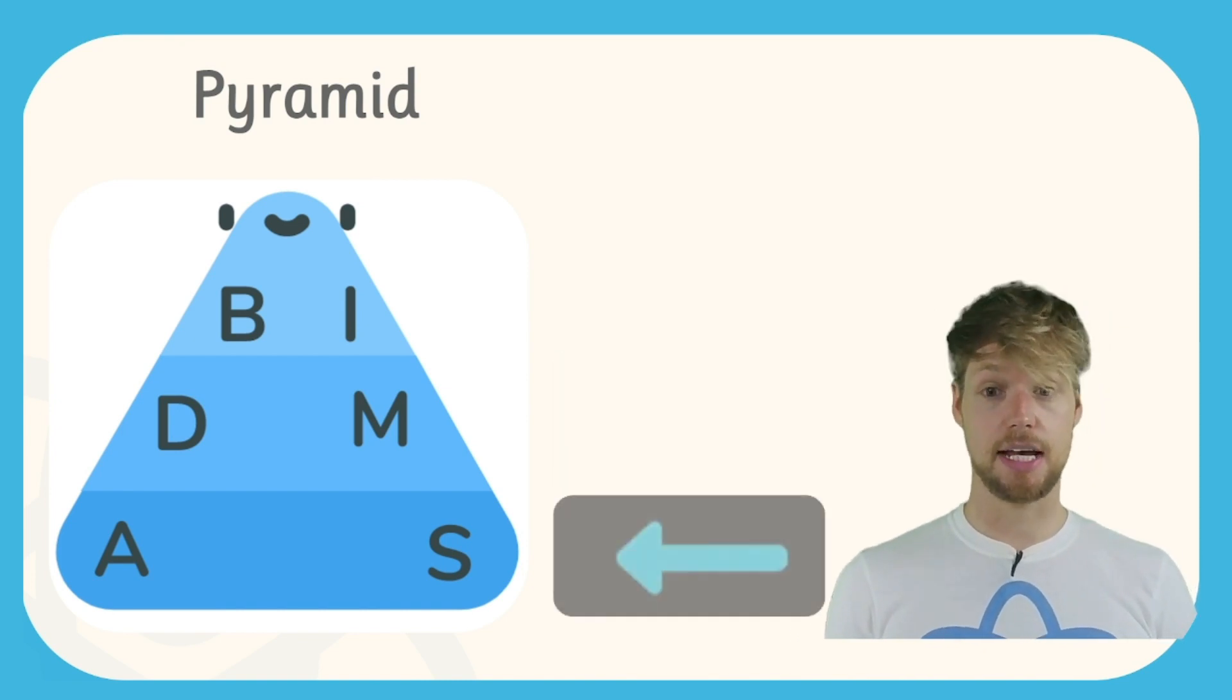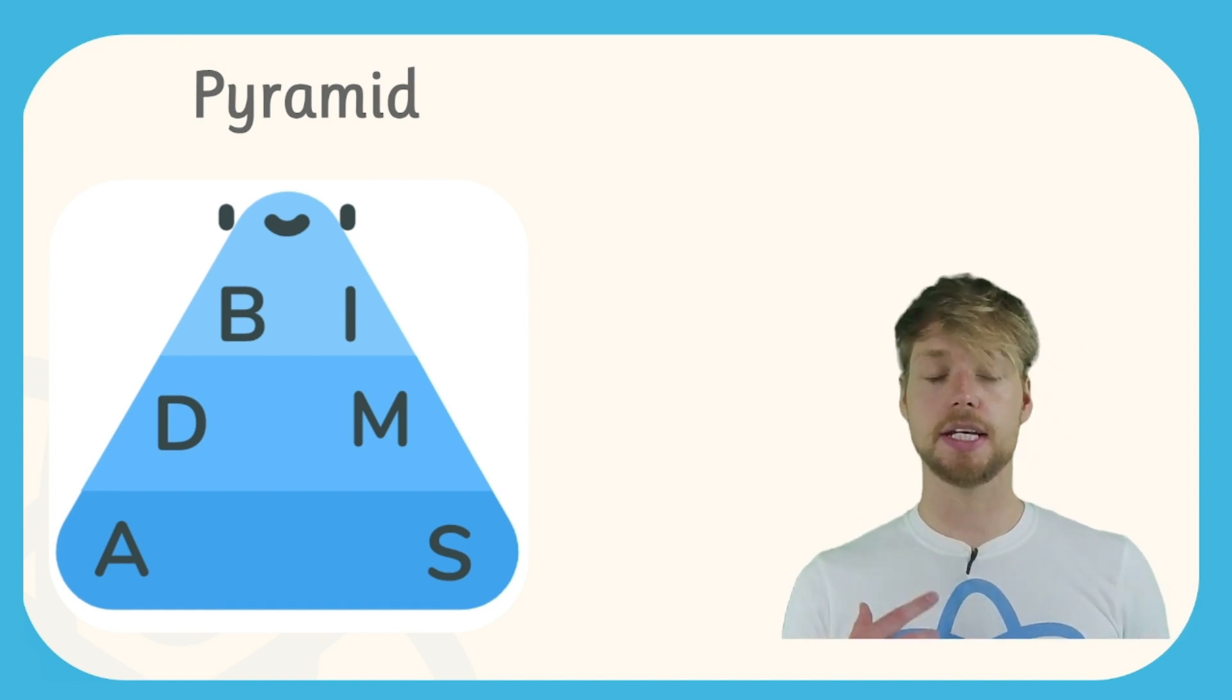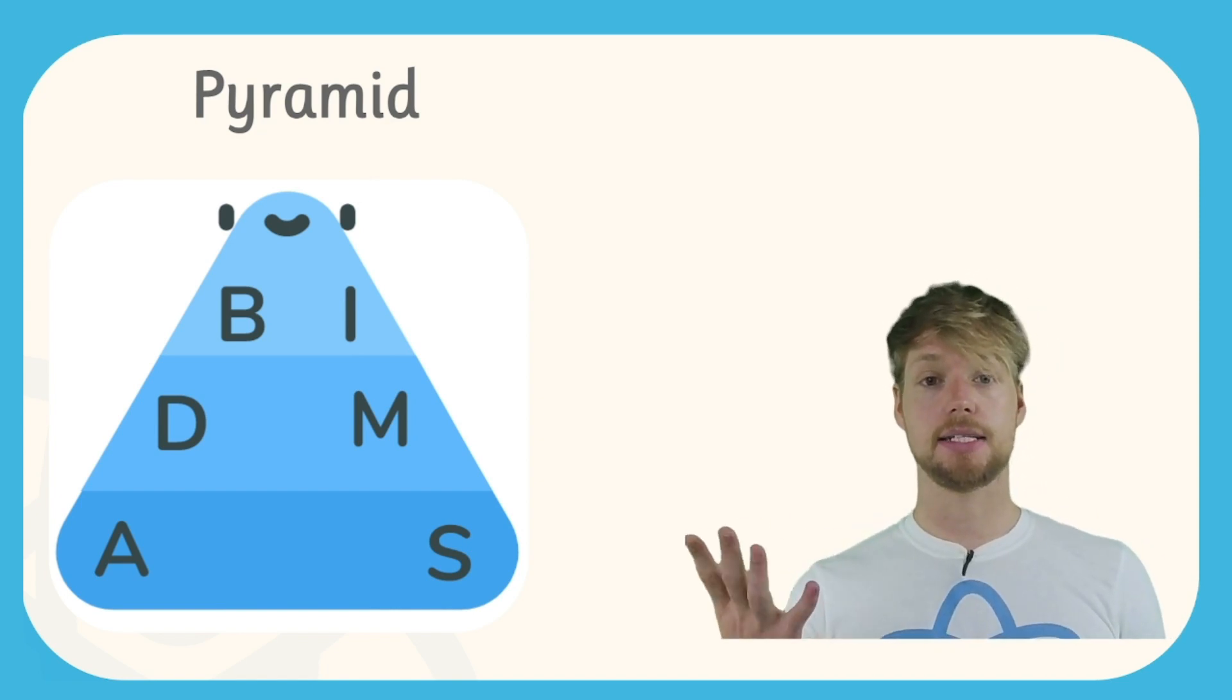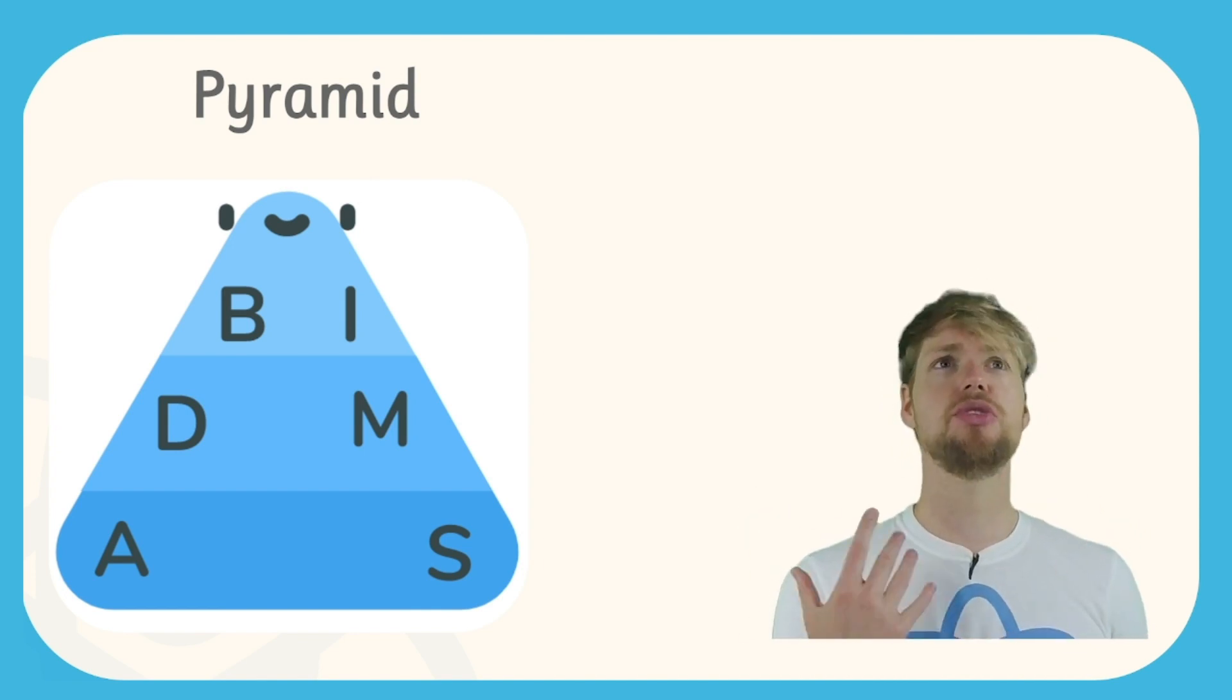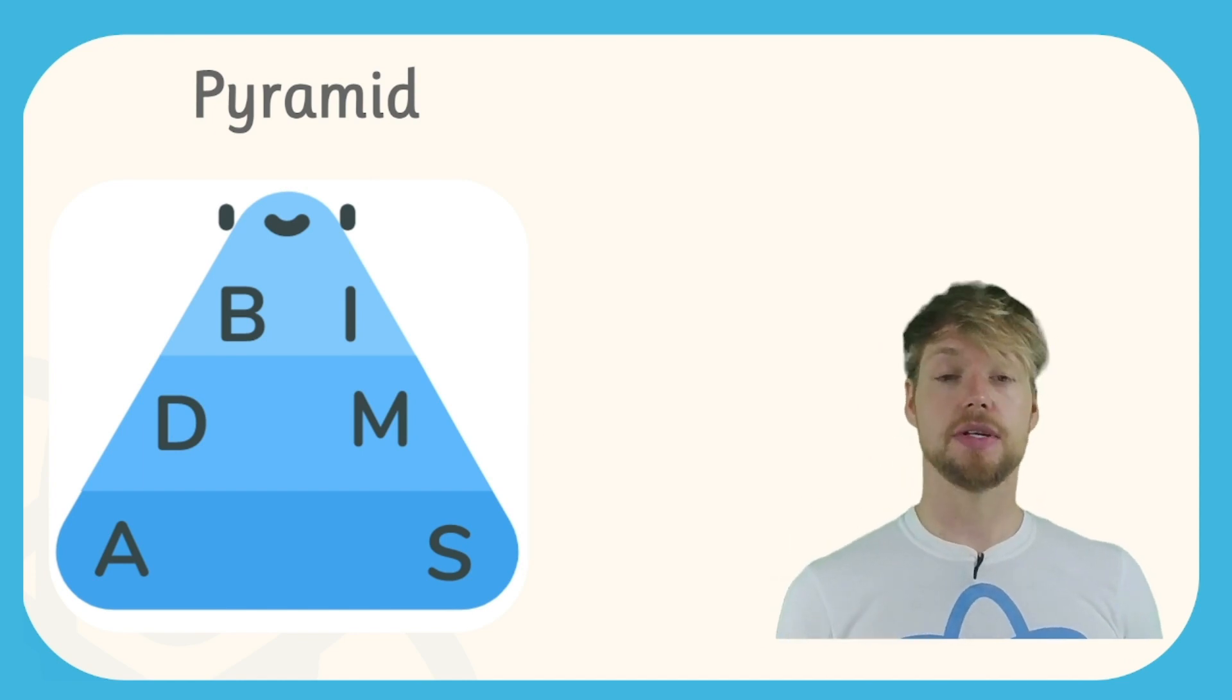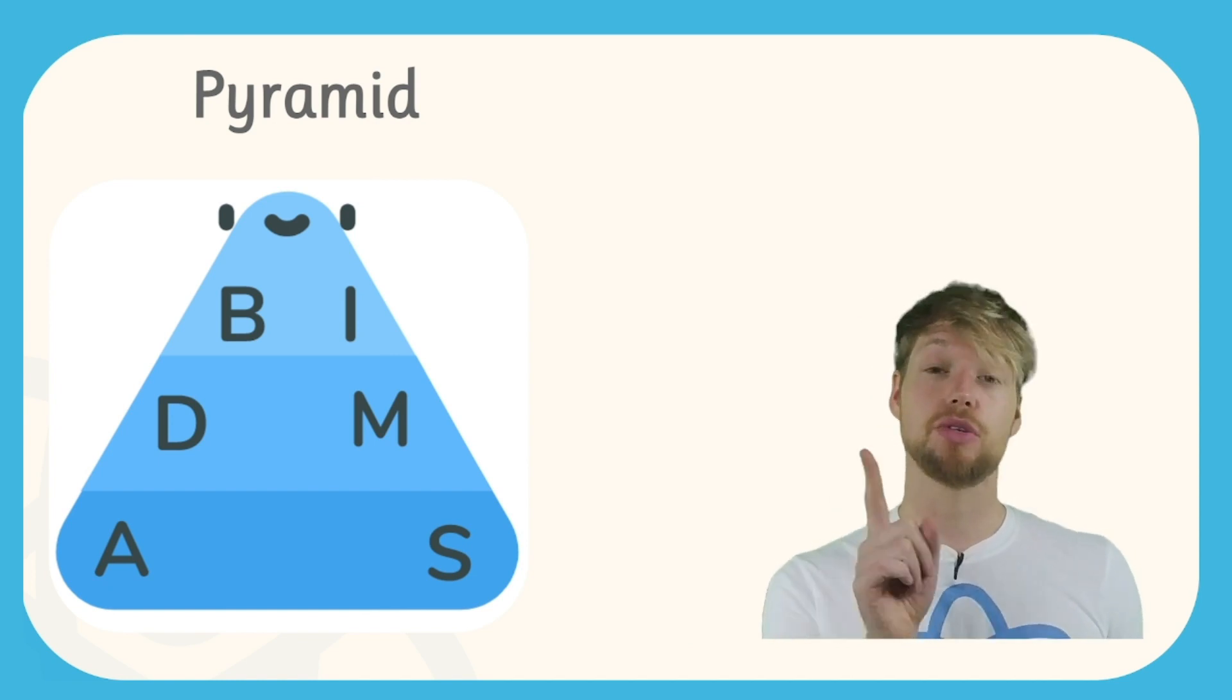The reason this tiering system is important is because when you are within a particular tier you always work from the left to the right. So if we were in tier two and we had division and multiplication, we would work from the left to the right of the equation and do whatever comes first. If the division comes first we'll do the division, if the multiplication comes first we'll do the multiplication. That's because division and multiplication are on the same tier.